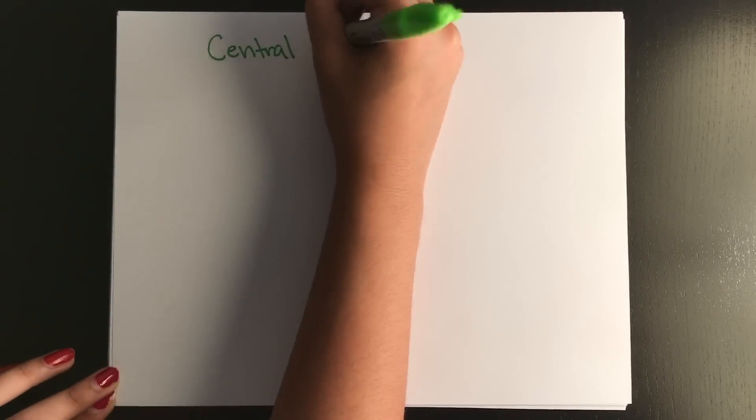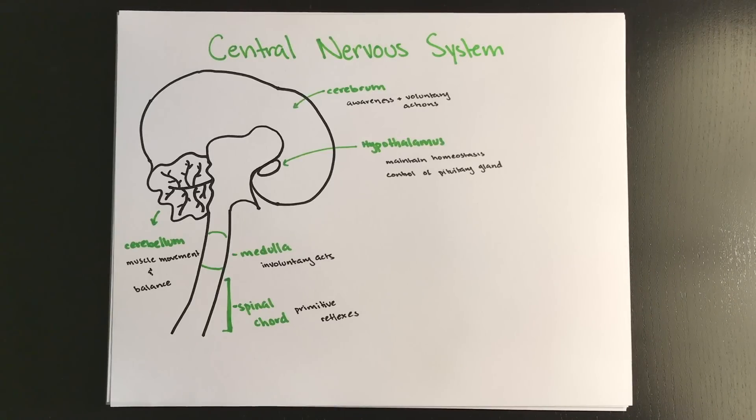So now we're going to break down the central nervous system. So the spinal cord is involved in primitive reflex actions and the cerebrum, which is where we have our conscious awareness of our sensations and certain voluntary actions. This is all the pink stuff in your brain. It's important. And it makes up your central nervous system. The other components you want to know about are the cerebellum, associated with muscle movement and balance, your medulla, which takes on all your involuntary acts, such as breathing, the hypothalamus, which maintains body homeostasis and controls the pituitary gland, which is important for the endocrine system.